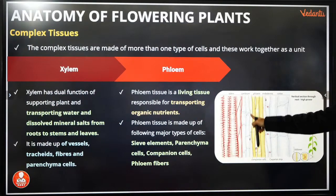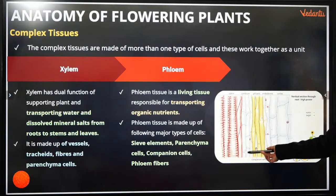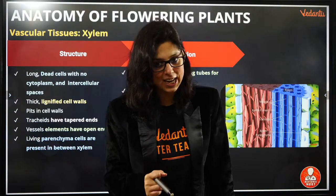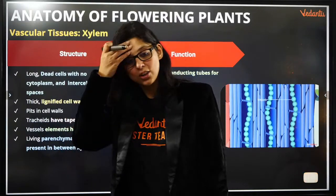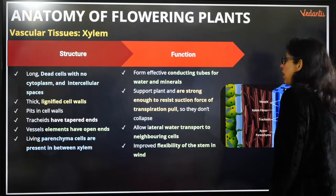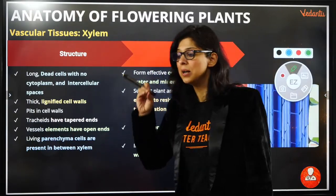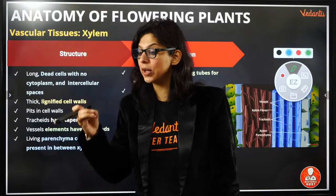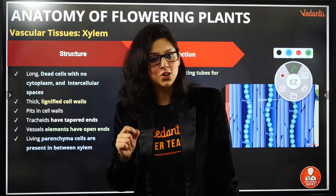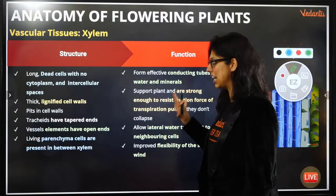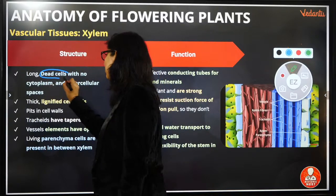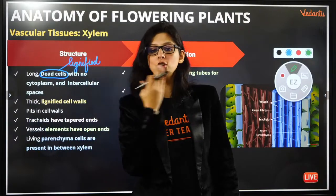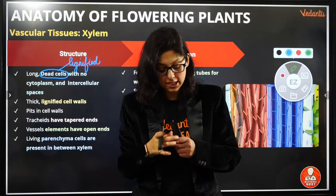Let's see this beautiful GIF showing how nutrients are being transported — you can see how water is coming and being transported by the xylem. Now let's come to the structure of xylem. The structure of xylem consists of long dead cells with no cytoplasm. They are dead because the cells are lignified. When you apply lignification to a cell it is like mummification — you are covering the entire cell from outside.